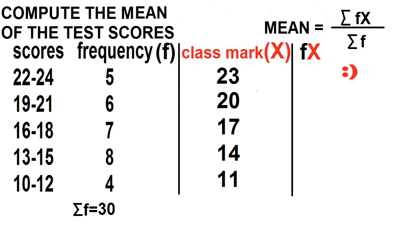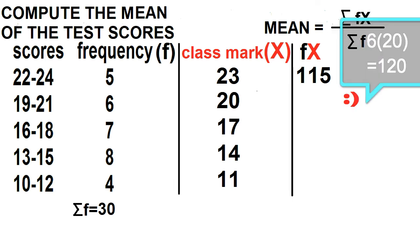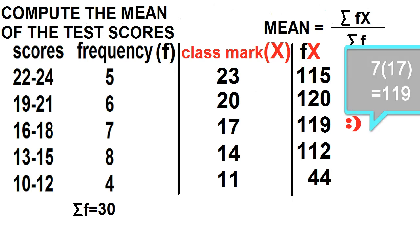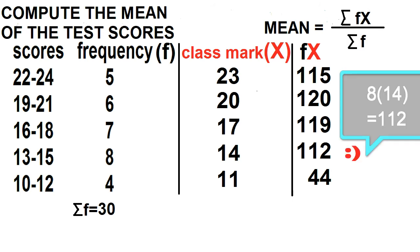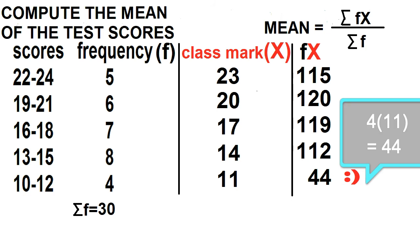5 times 23 is 115. 6 times 20 is 120. 7 times 17 is 119. 8 times 14 is 112. 4 times 11 is 44. Then find the sum.